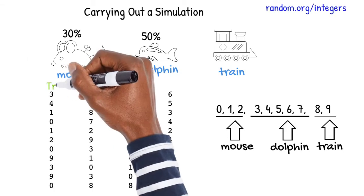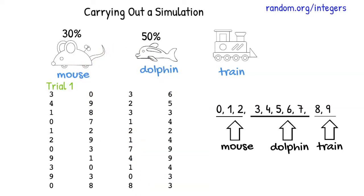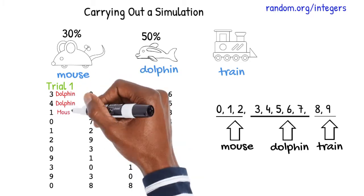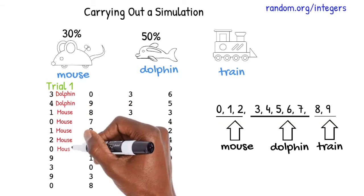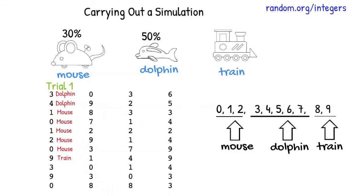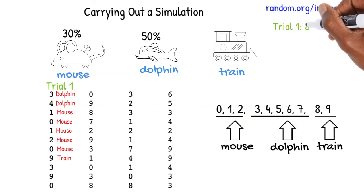The first column represents my first trial. The three means that I picked a dolphin. Four is another dolphin. One is a mouse. Zero, another mouse. One is another mouse. Two, another mouse. Zero, another mouse. And finally, with nine, we pick a train. Trial one ends. We picked toys from eight boxes in that trial to collect all three toys.